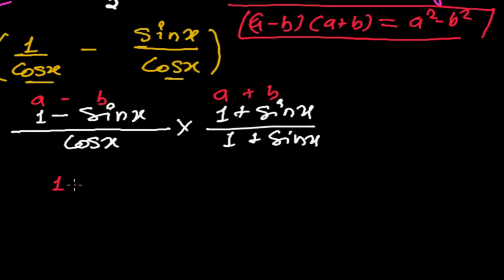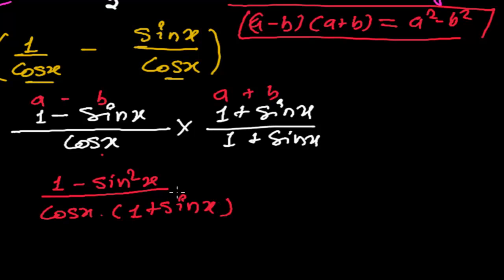1 squared, that is 1 itself, and sin square x, whole divided by cos x times this. So cos x times 1 plus sin x. And again...